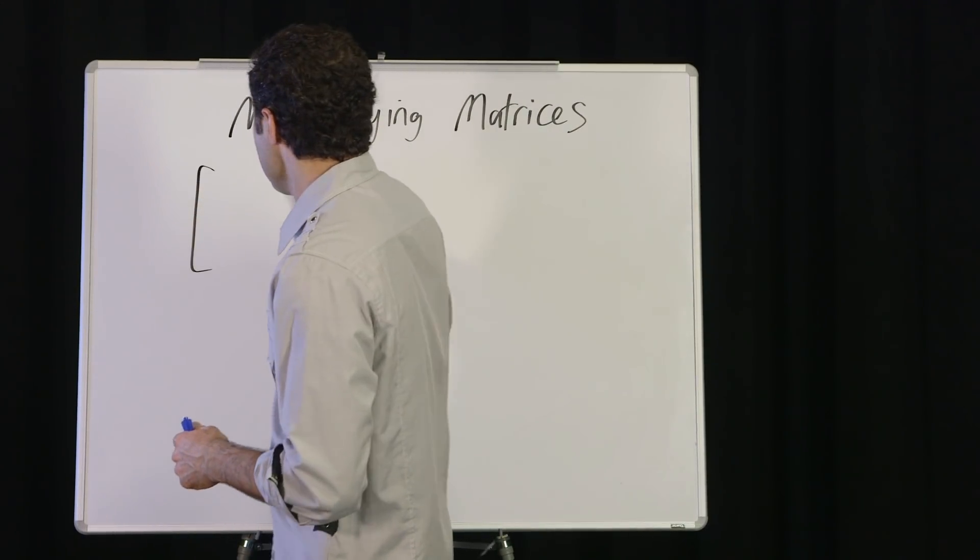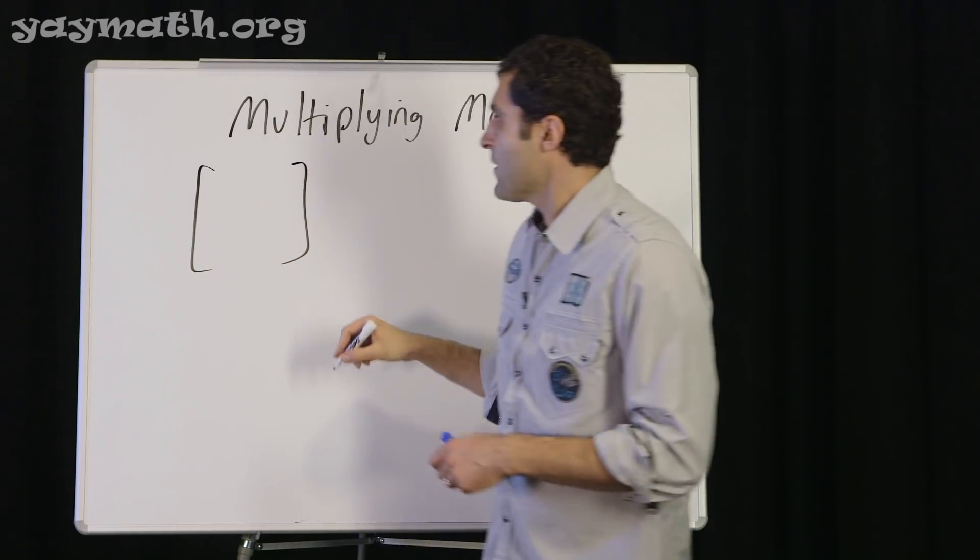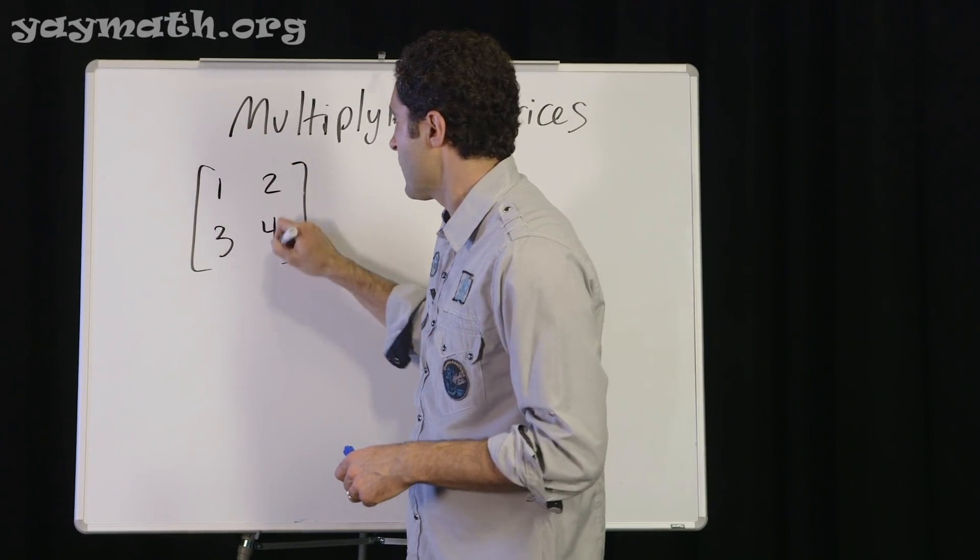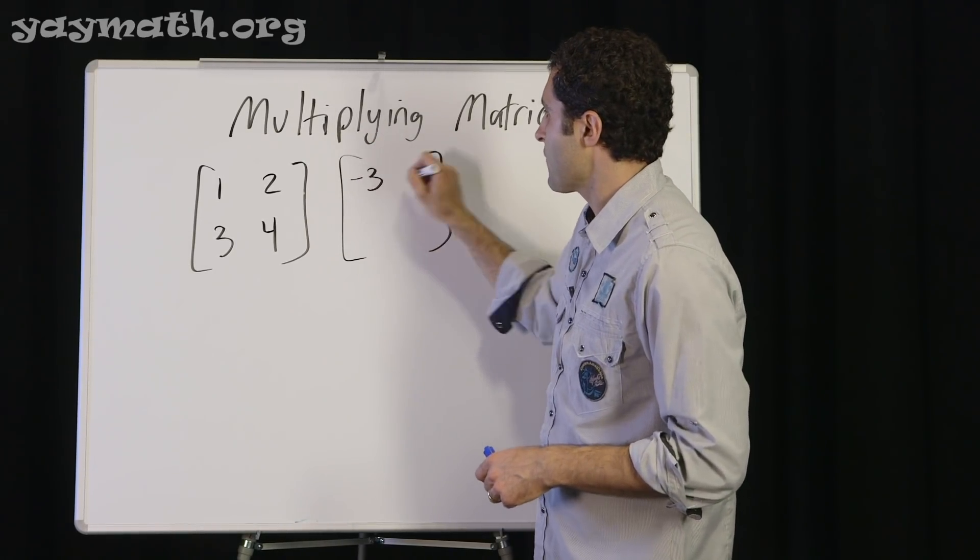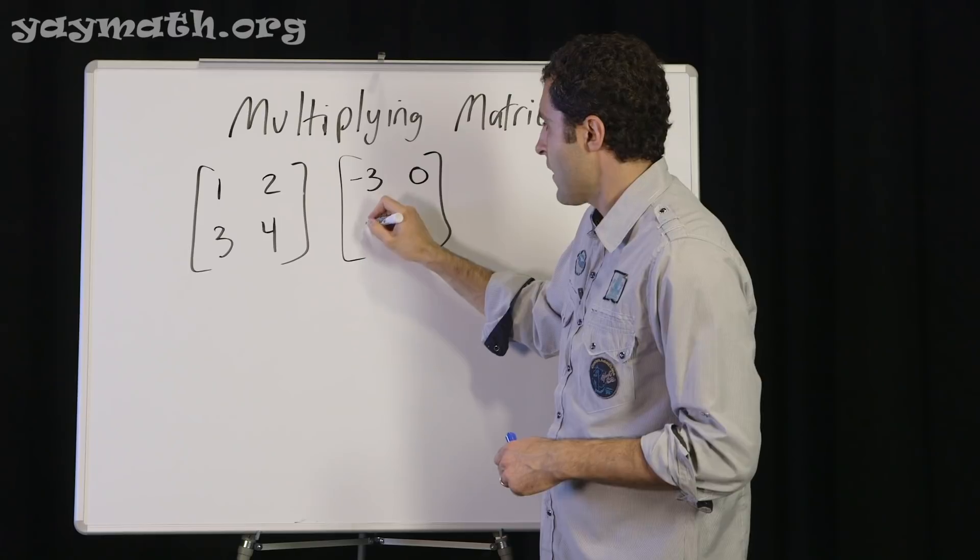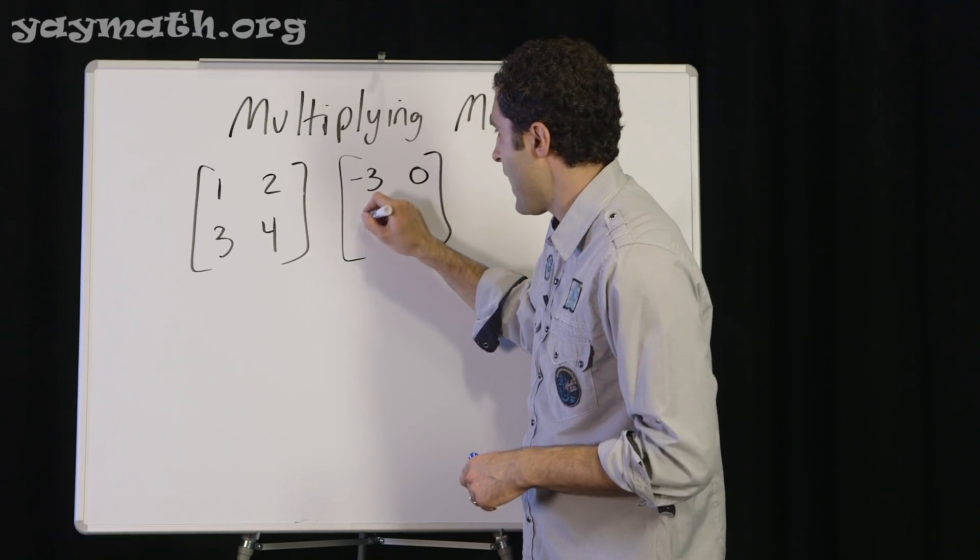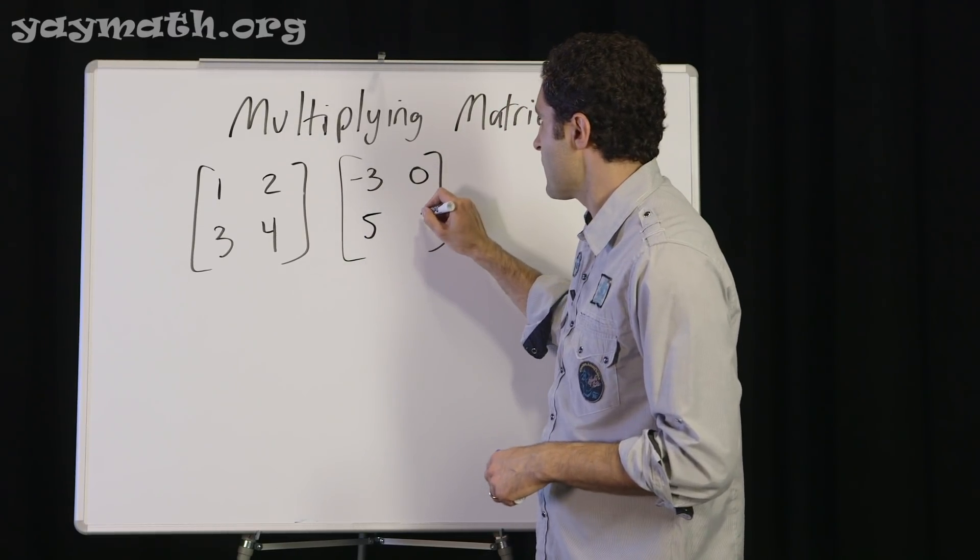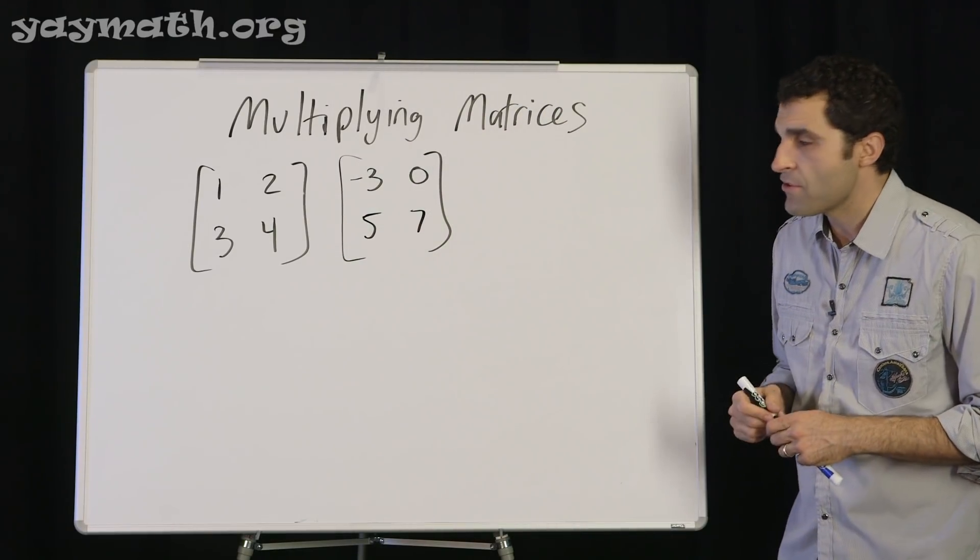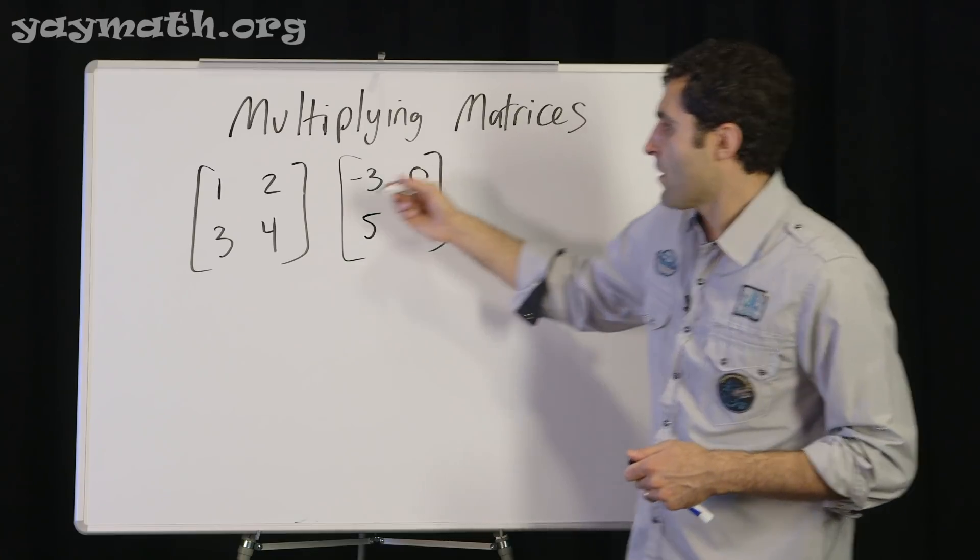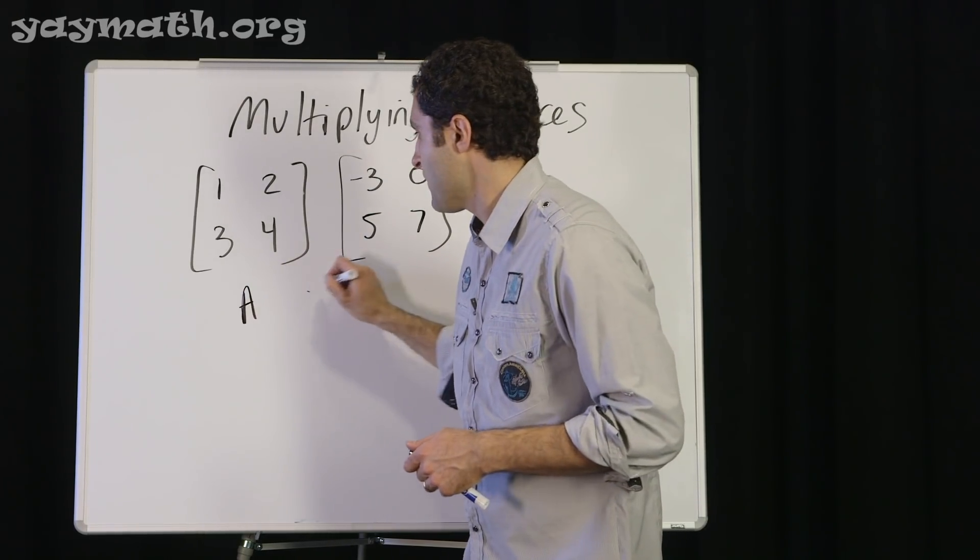Let's create a 2 by 2 matrix. Let's go with 1, 2, 3, 4. And then let's go over here, make up some numbers, negative 3, 0, 5 and 7. Now we're going to multiply these two matrices. I'm going to call this A times B.